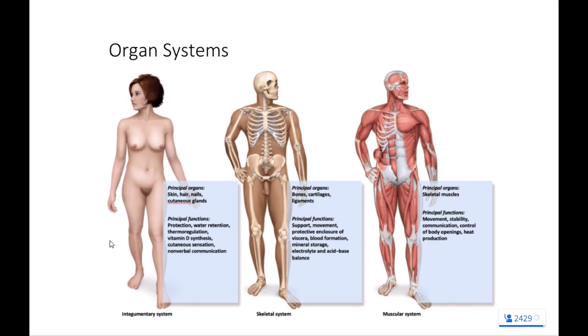Our skeletal system has some secondary functions that are also really important. For instance, we store calcium, we store phosphorus, and we store other minerals within our skeletal system. For individuals that have heavy metal poisoning, one of the ways our bodies cope is to take those heavy metals and sequester them in the dense tissue of our skeletal system to remove those heavy metals from circulation — which also means that heavy metal poisoning can be found forensically within the skeletal system.